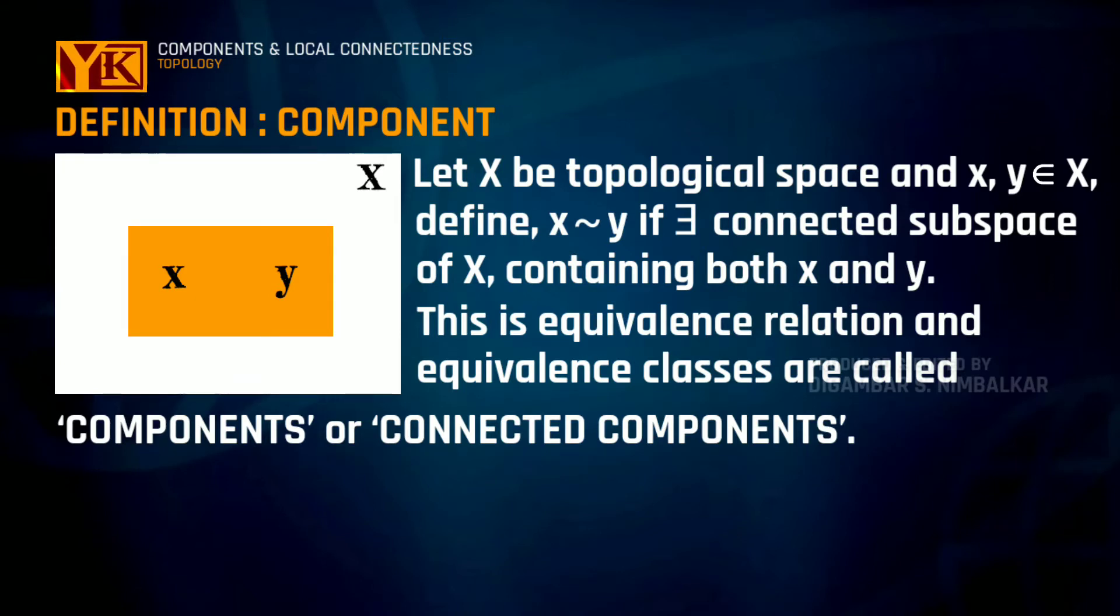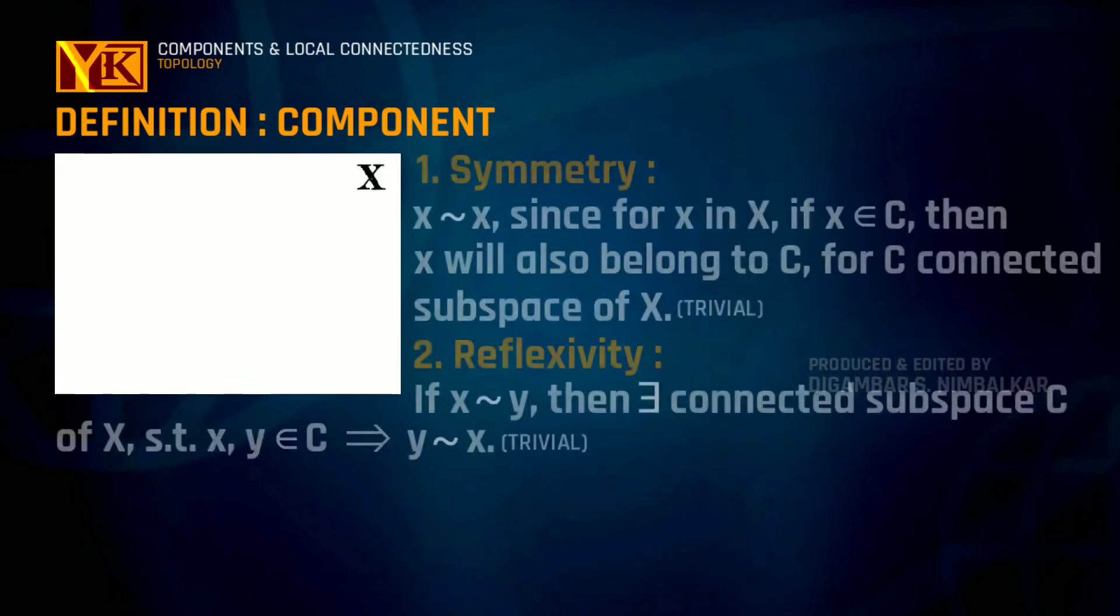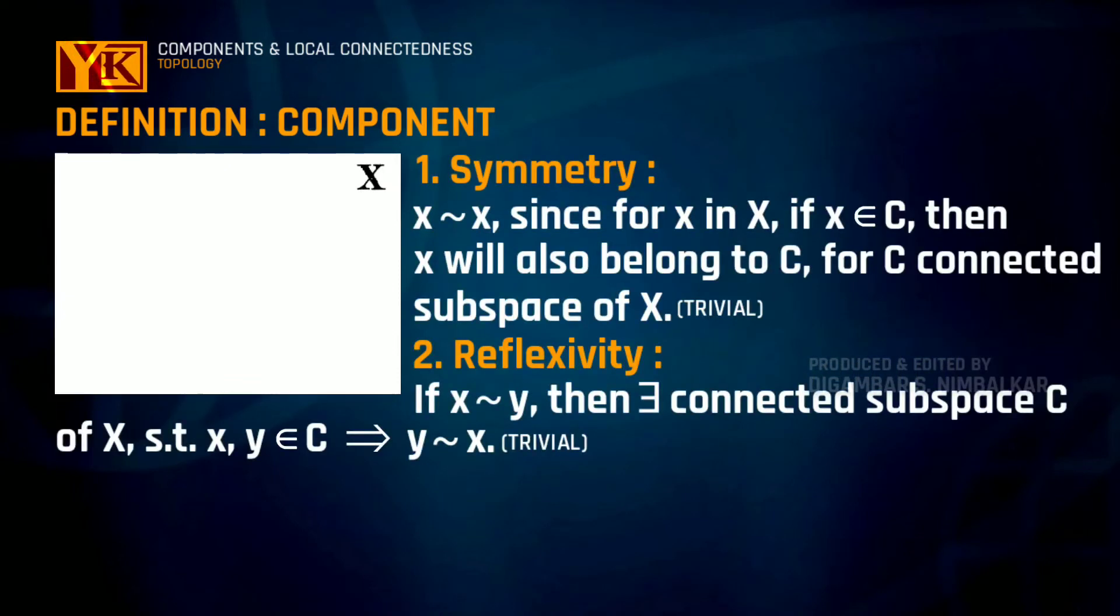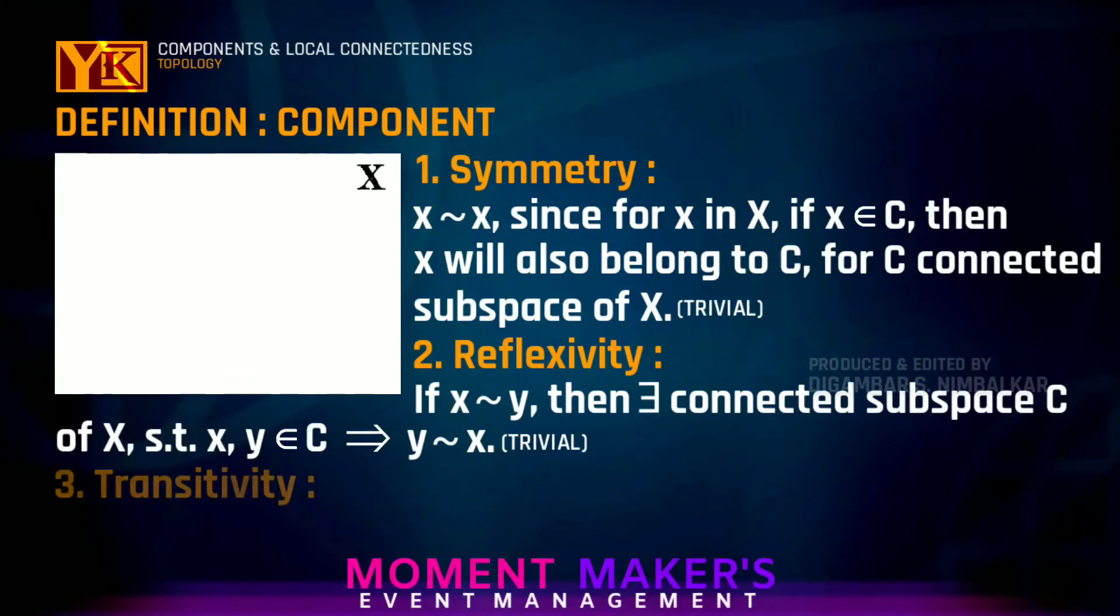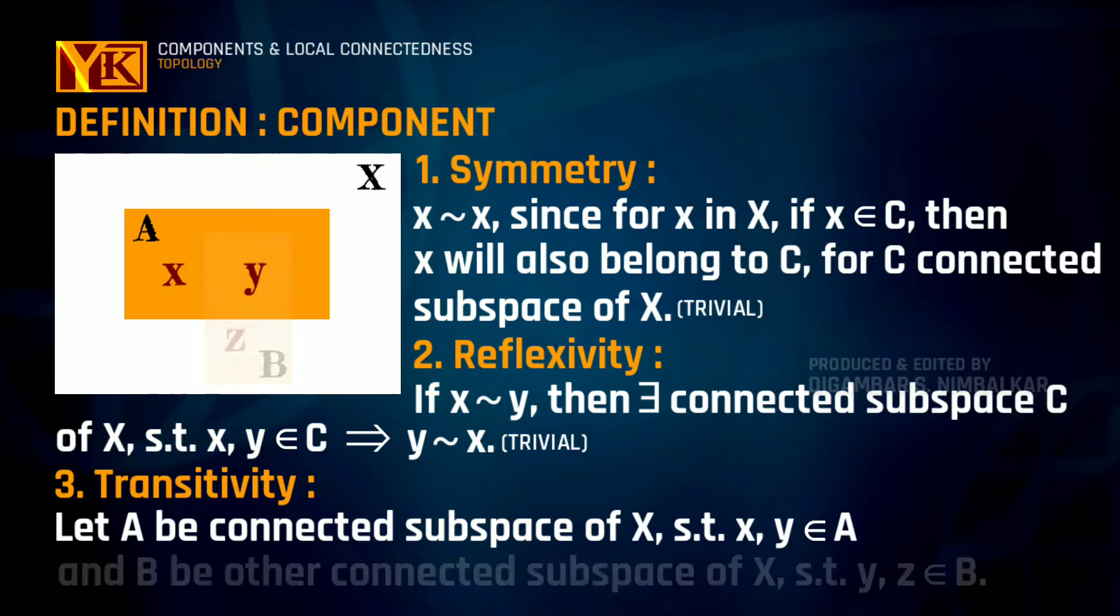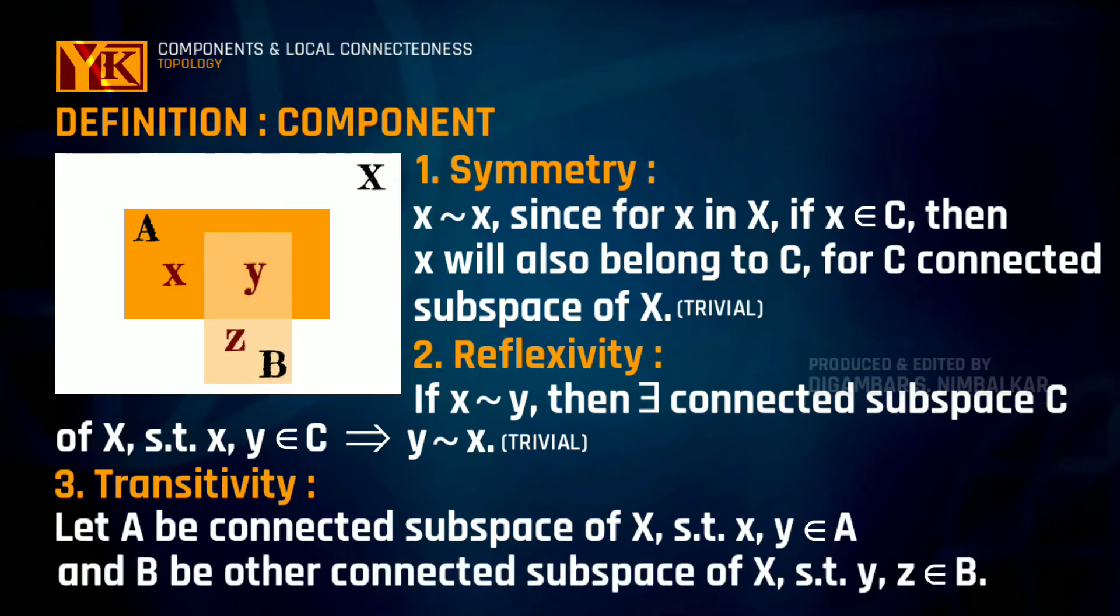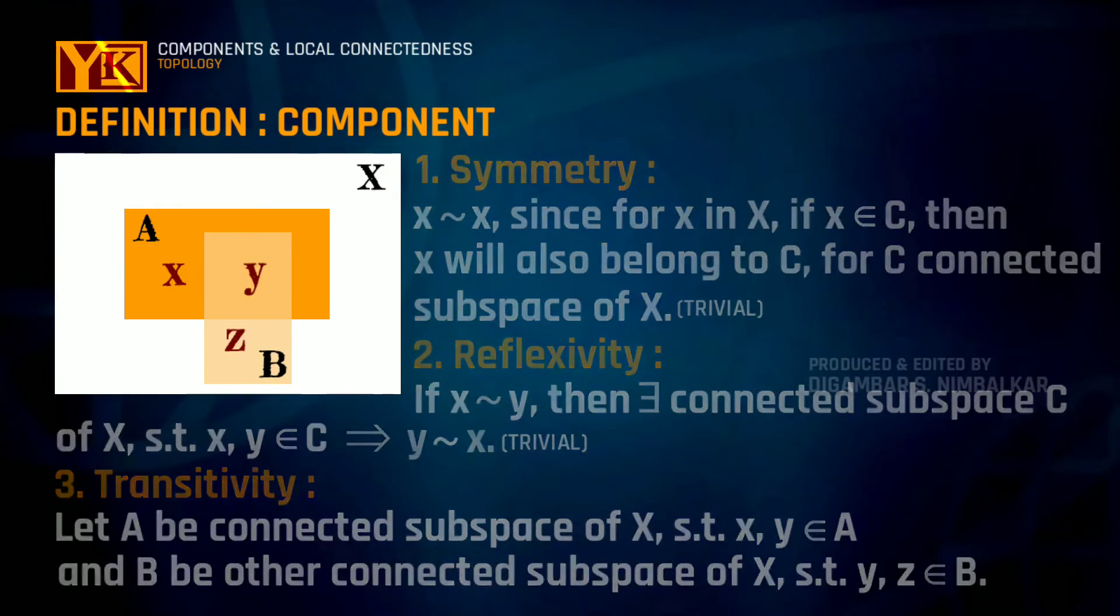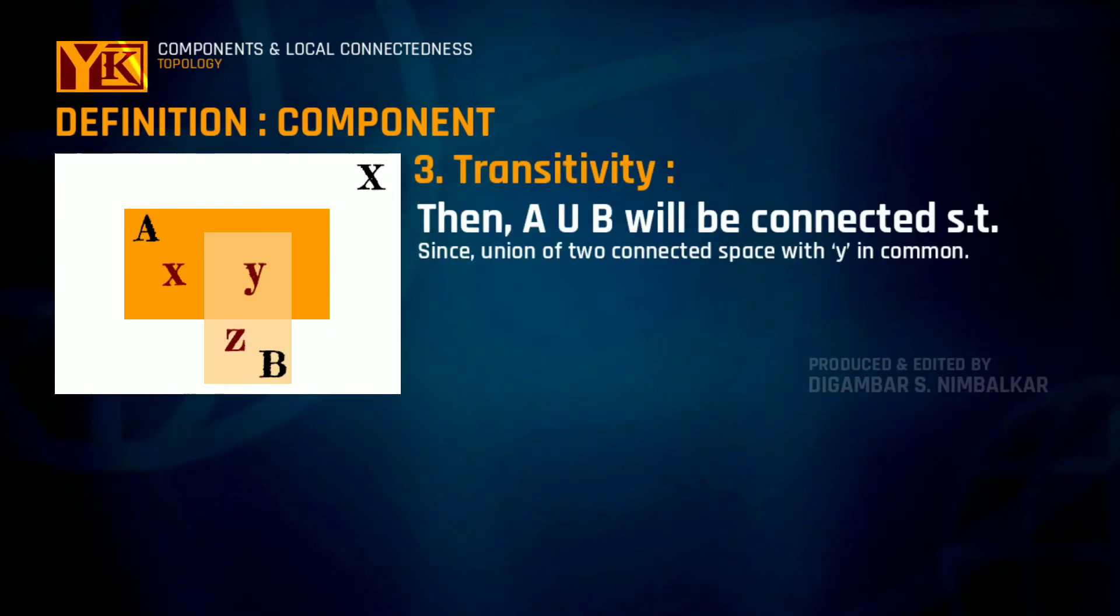Now, we will see how it is equivalence relation. The two properties symmetry and reflexivity are quite clear and for transitivity, let us consider A is connected subspace of x containing x and y and B is another connected subset of x containing y and z. Then as A union B will be union of two connected spaces, it will be connected and it will contain x and z.